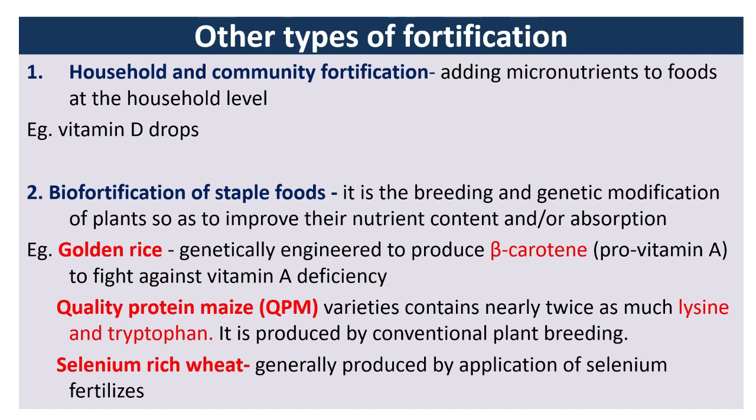Biofortification is the breeding and genetic modification of plants so as to improve their nutrient content and/or absorption. Examples include golden rice — a genetically engineered rice producing beta-carotene (pro-vitamin A) to fight vitamin A deficiency — and Quality Protein Maize (QPM), which contains nearly twice as much lysine and is produced by conventional plant breeding. Selenium-rich wheat is generally produced by application of selenium fertilizer.